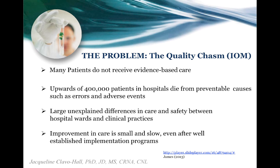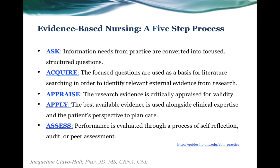Those are the de-implementation things we were talking about when looking at the Brownson chapter. When we're looking at evidence-based nursing, we're really talking about a five-step process. Depending on what you look at, you'll see these terms given in different ways. The ones I like are the ones Dr. Clavo Hall used — five A's, which are easy to remember as an acronym: Ask, Acquire, Appraise, Apply, and Assess. It looks like Dr. Clavo Hall got these from the University of North Carolina, and this is a useful way of looking at how we undertake evidence-based practice.